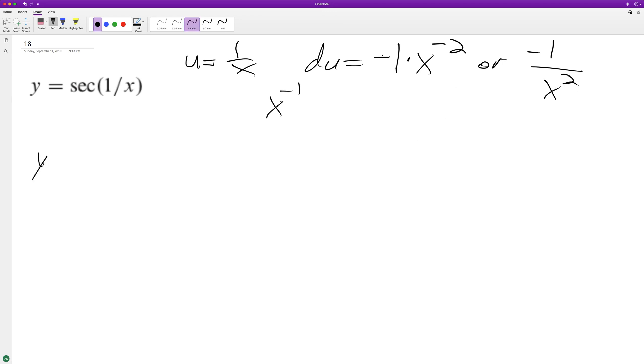So we'll have y equals the secant of u. The derivative of y prime equals du, because we take the derivative on the inside, times the derivative of the secant, which is secant u times tangent u.